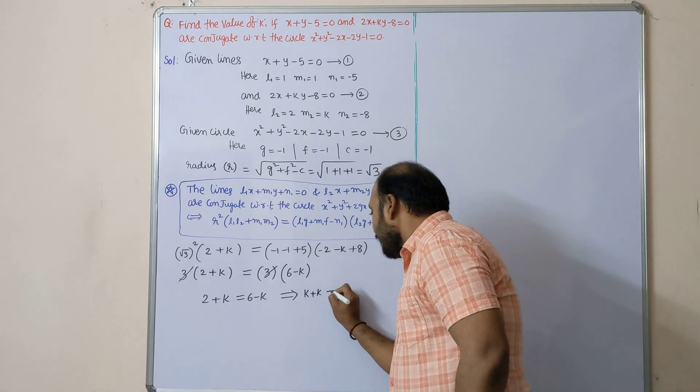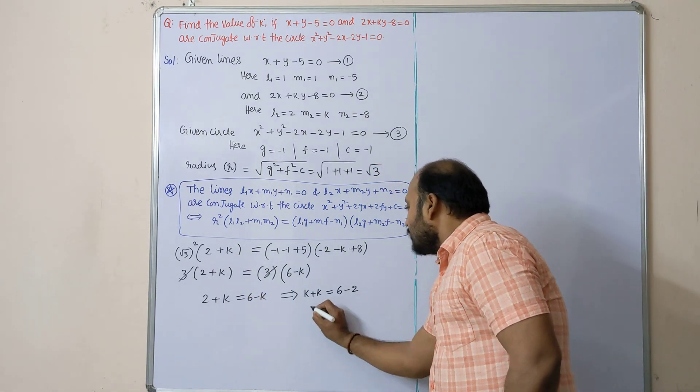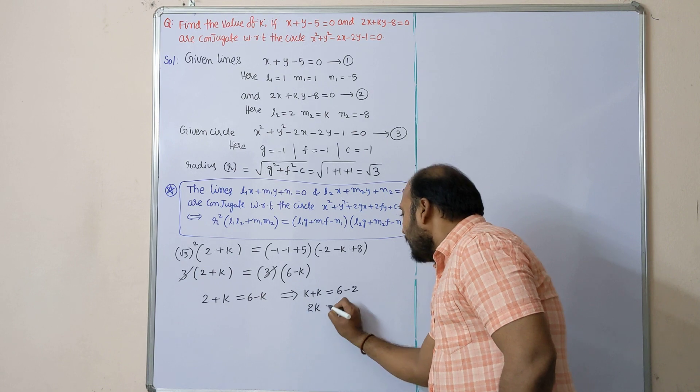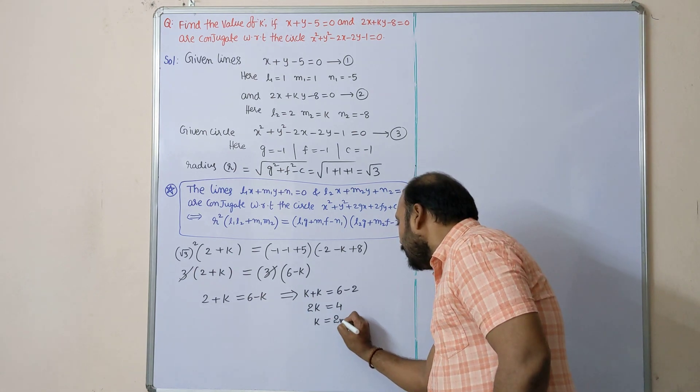That implies k on one side, so k plus k = 2k equals 6 minus 2 = 4. So 2k = 4, k = 2.